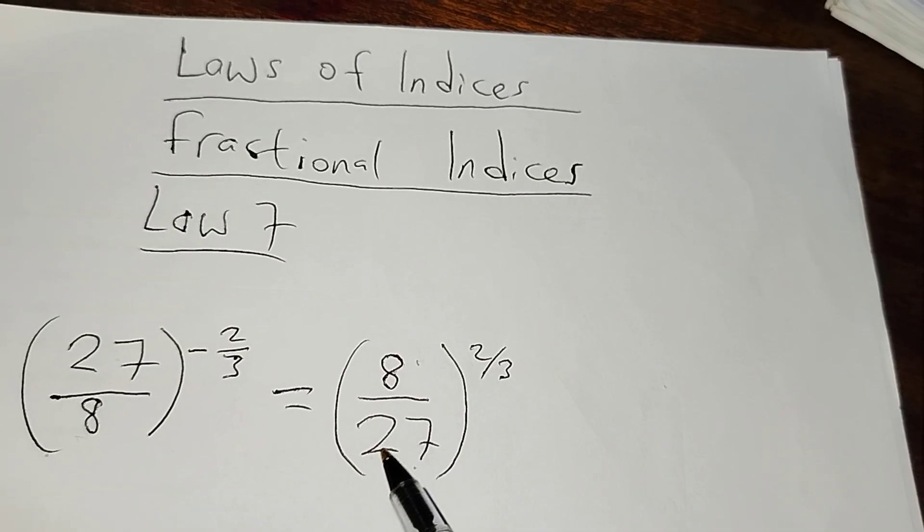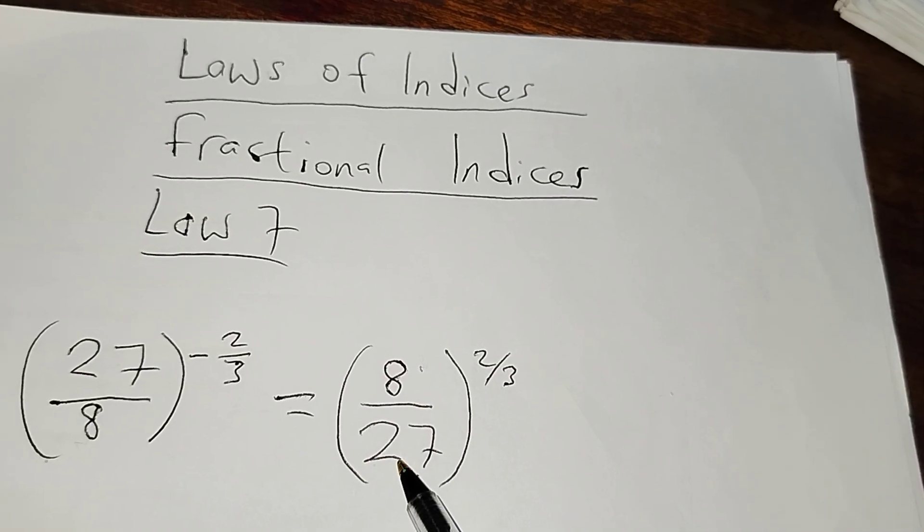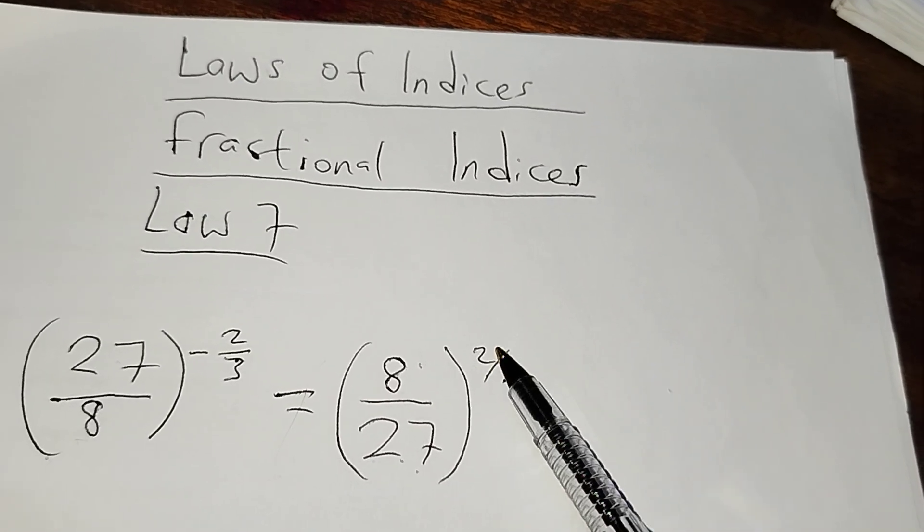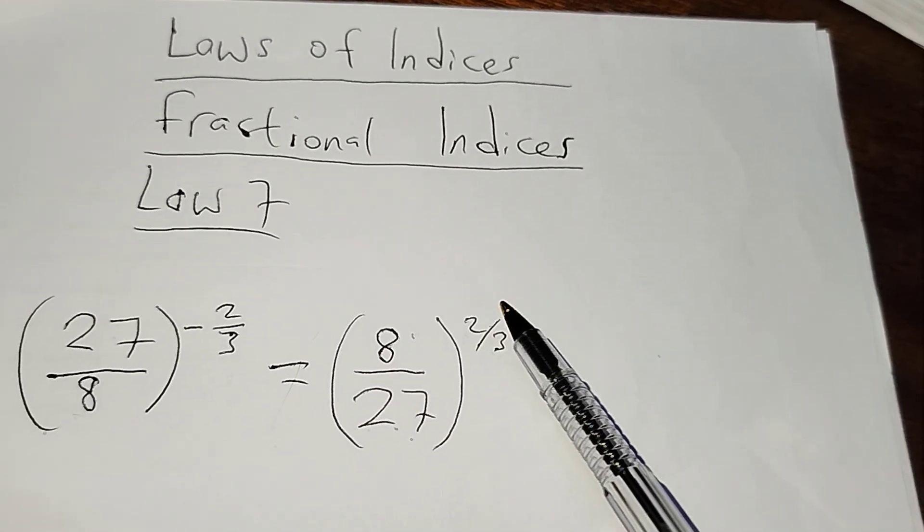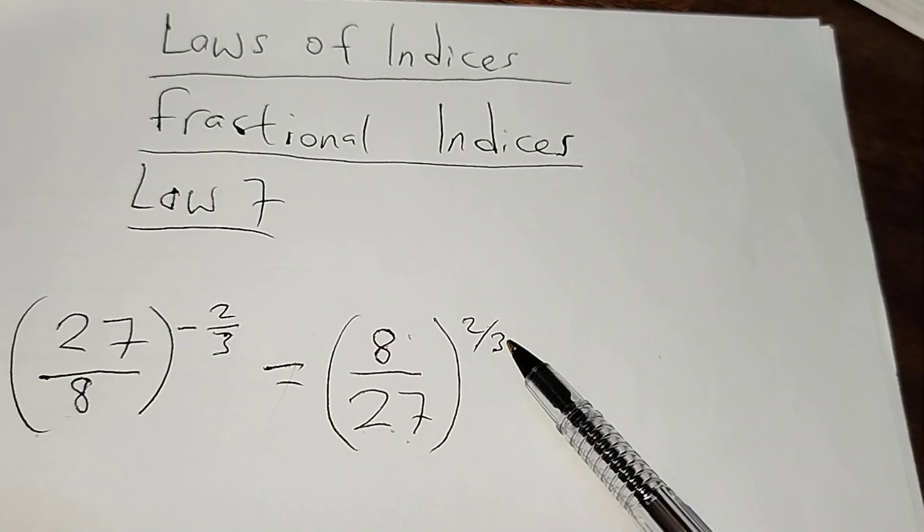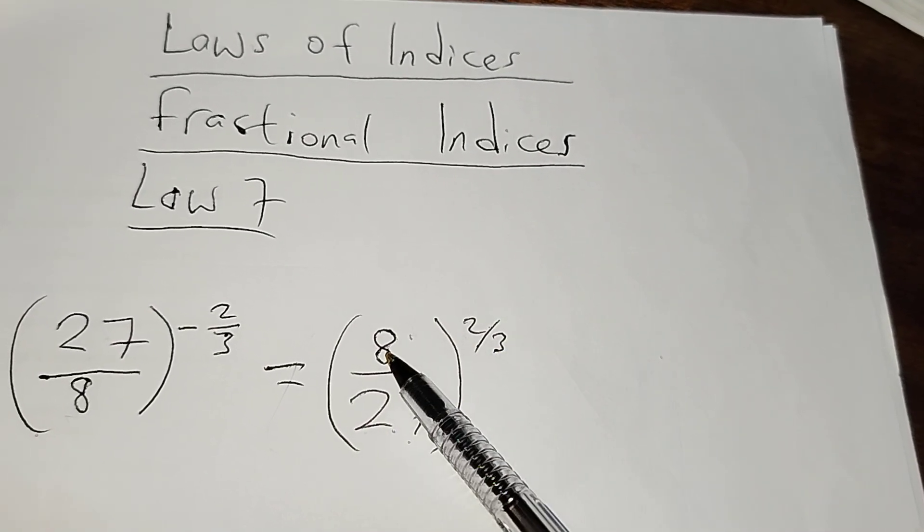Divided by the cube root of 27 and raise them to the power 2. That is what the fractional power or fractional index is indicating here. I must find the cube root of 8 divided by the cube root of 27 and raise them to the power 2.